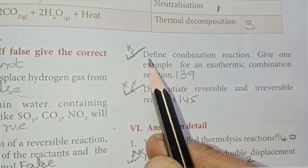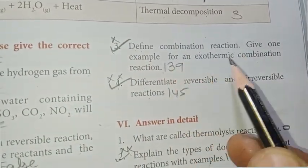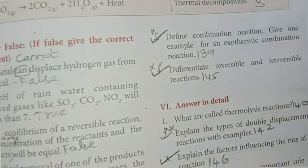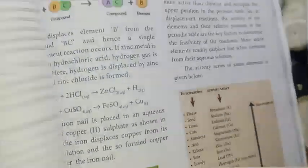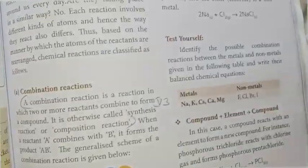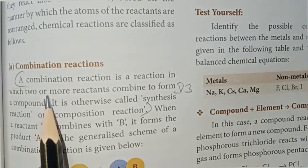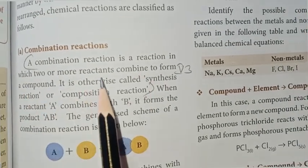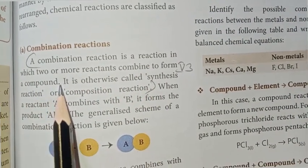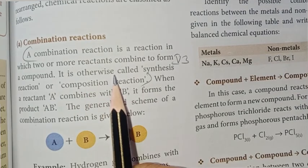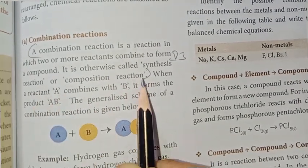Third question: define combination reaction and give an example for an exothermic combination reaction. Page number 139. A combination reaction is a reaction in which two or more reactants combine to form a compound. It is otherwise called a synthesis reaction or composition reaction.